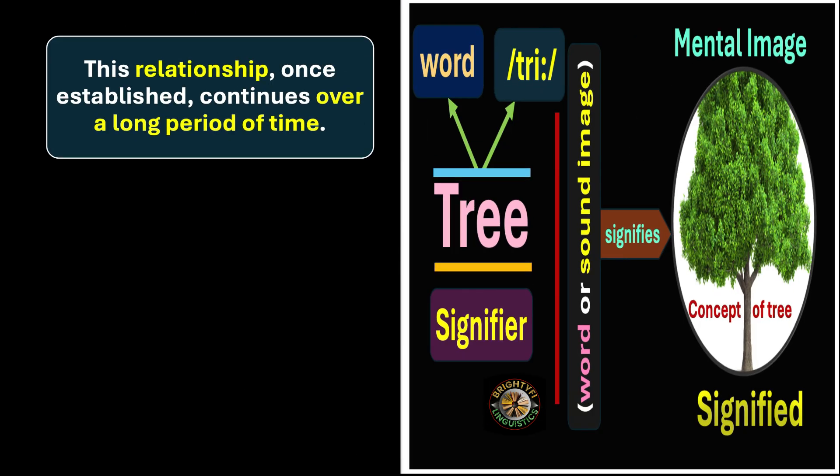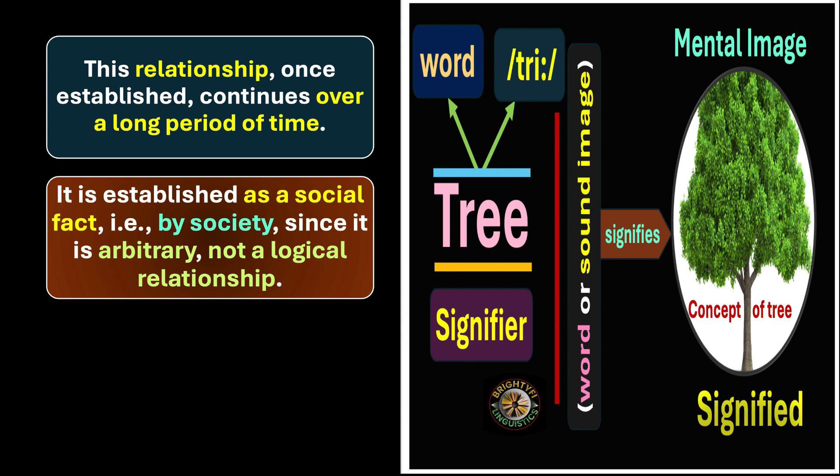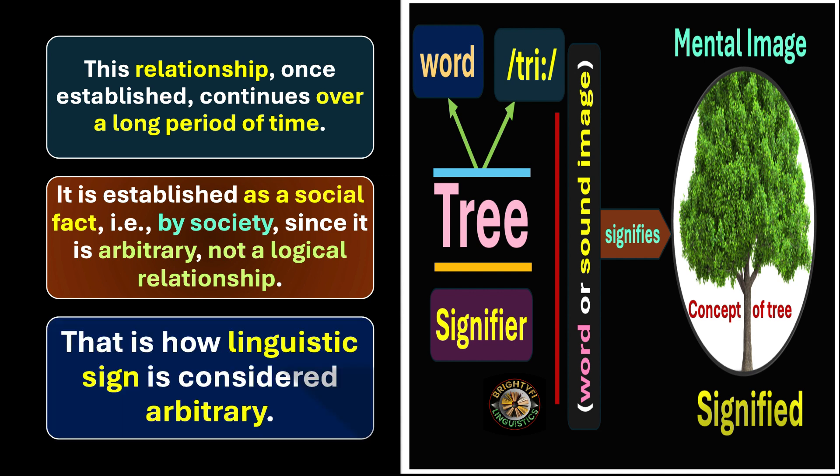This relationship, once established, continues over a long period of time. So the word 'tree,' which is the signifier, and the mental image — the picture of a tree — once this relationship between the word and the picture is established, it continues for a long period of time. It is established as a social fact, that is, by society. Since it is arbitrary — not a logical relationship — right from the very beginning, the signifier T-R-E-E could have been associated with any other picture. That is how the linguistic sign is considered arbitrary.